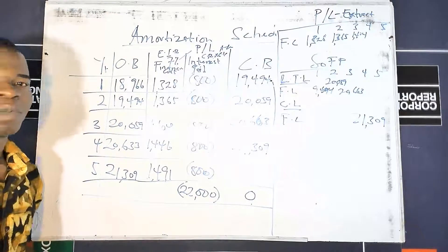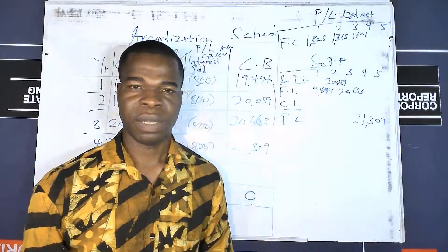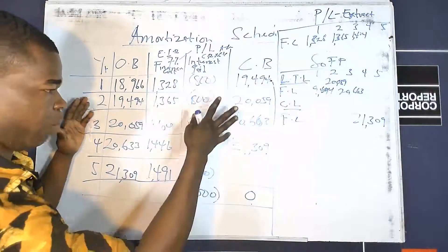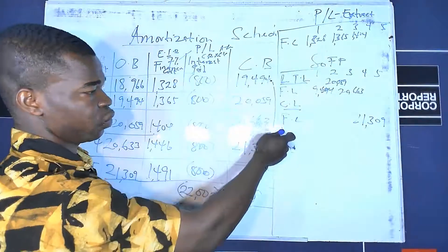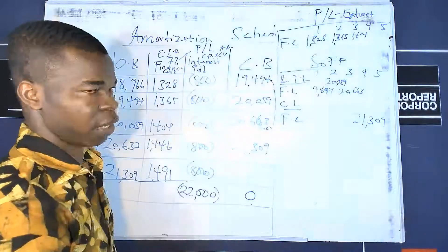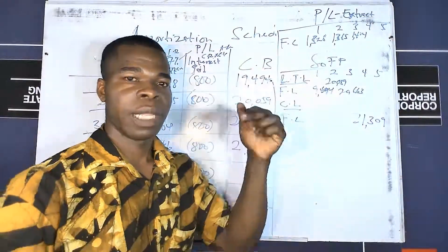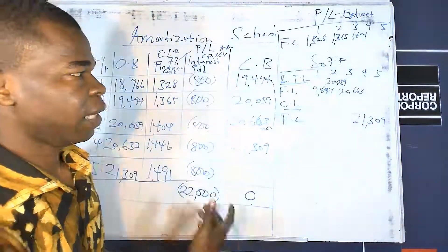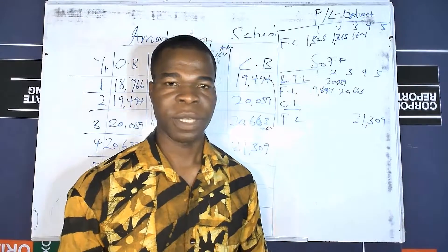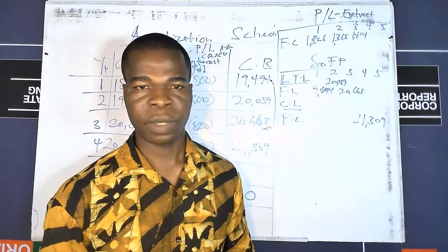This is how to transfer figures to the respective financial statements. The same approach applies when dealing with a financial asset, or when amortizing the liability component of a compound instrument. Remember: the last year before maturity falls under current liability; all earlier years fall under non-current liability. If it is a financial asset, the classification would be current and non-current asset accordingly. Thanks for being part of the learning family — leave any questions in the comments, and the question link is in the video description.